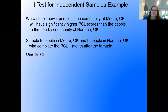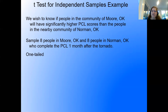What kind of test is this? One-tailed. Why? Because we claimed the results have a direction — we said scores will be higher in Moore than Norman. Had we said 'different,' this would have been two-tailed. Because we said 'higher,' it's one-tailed. Had we said 'lower,' it would also be one-tailed. As long as we have some sort of direction, it's one-tailed.